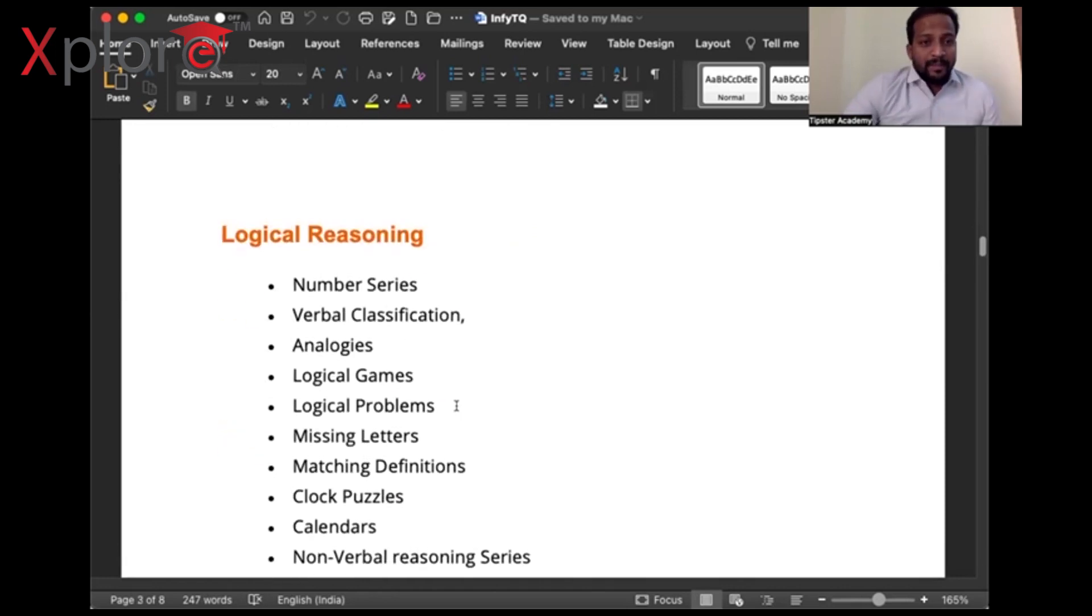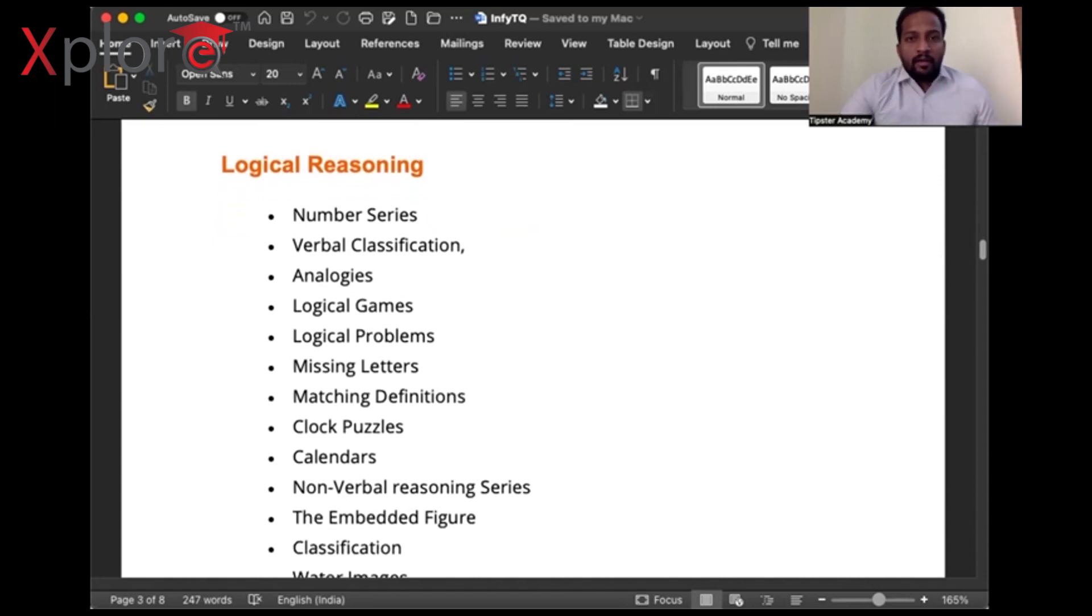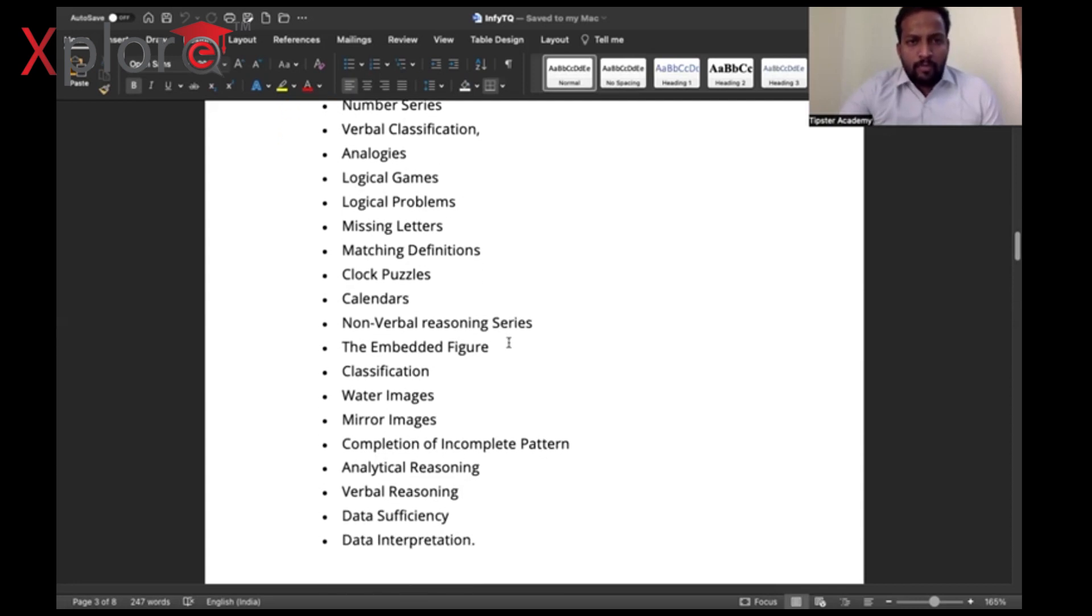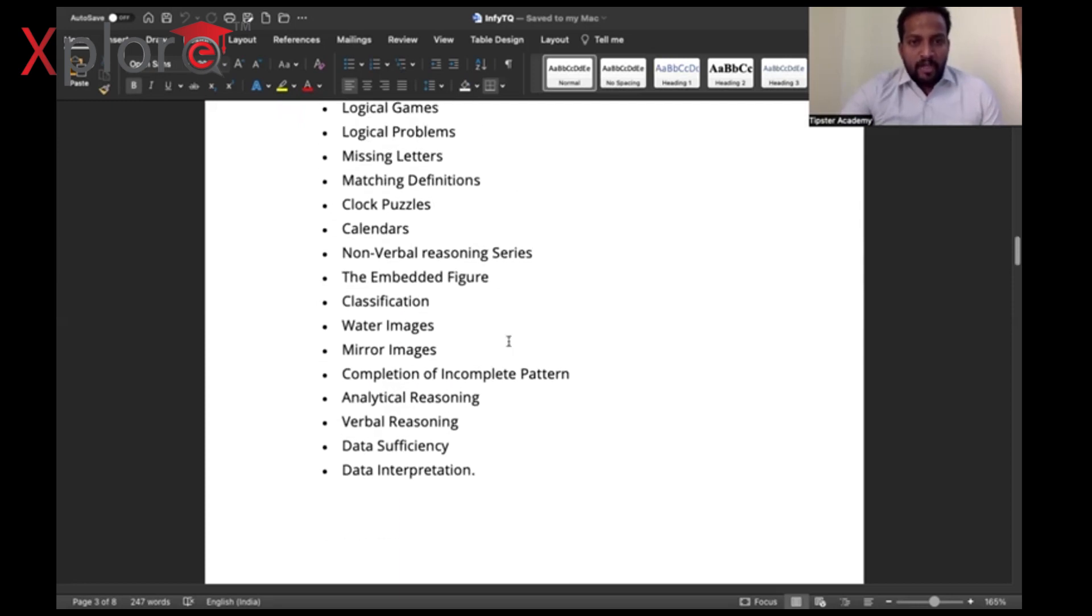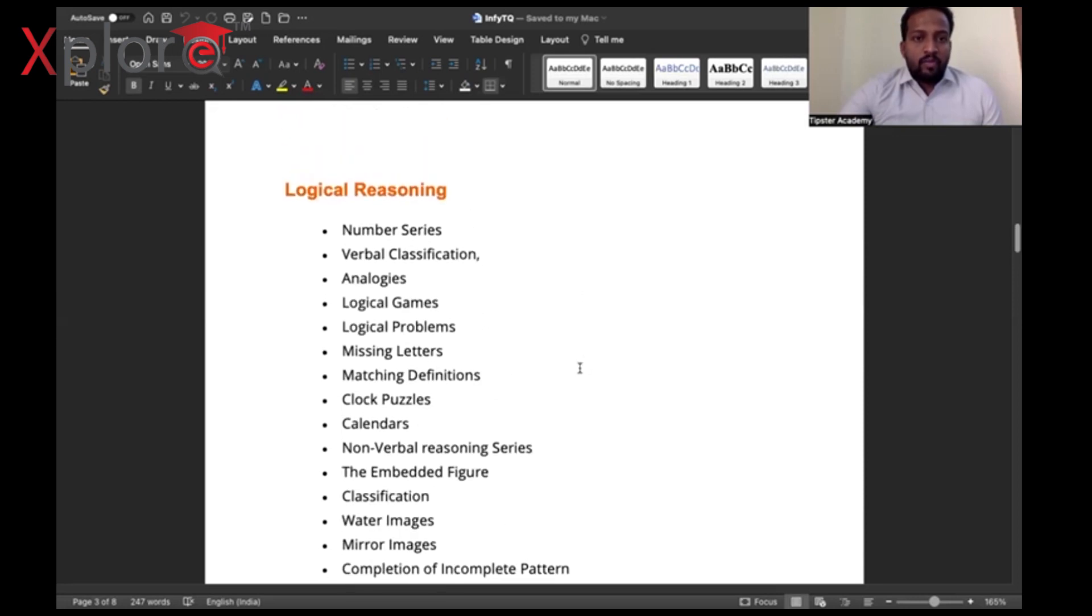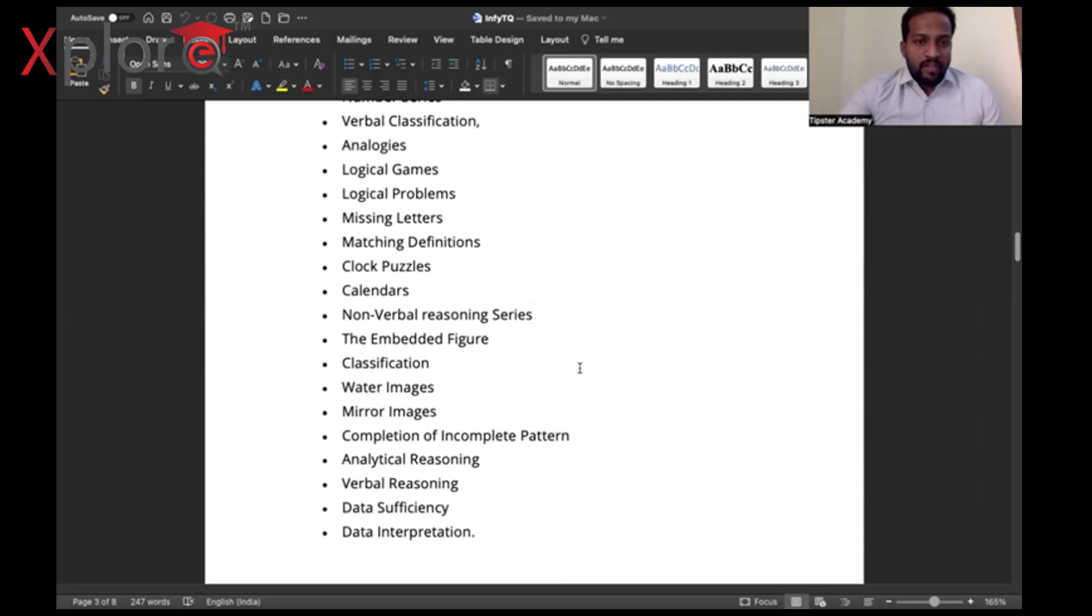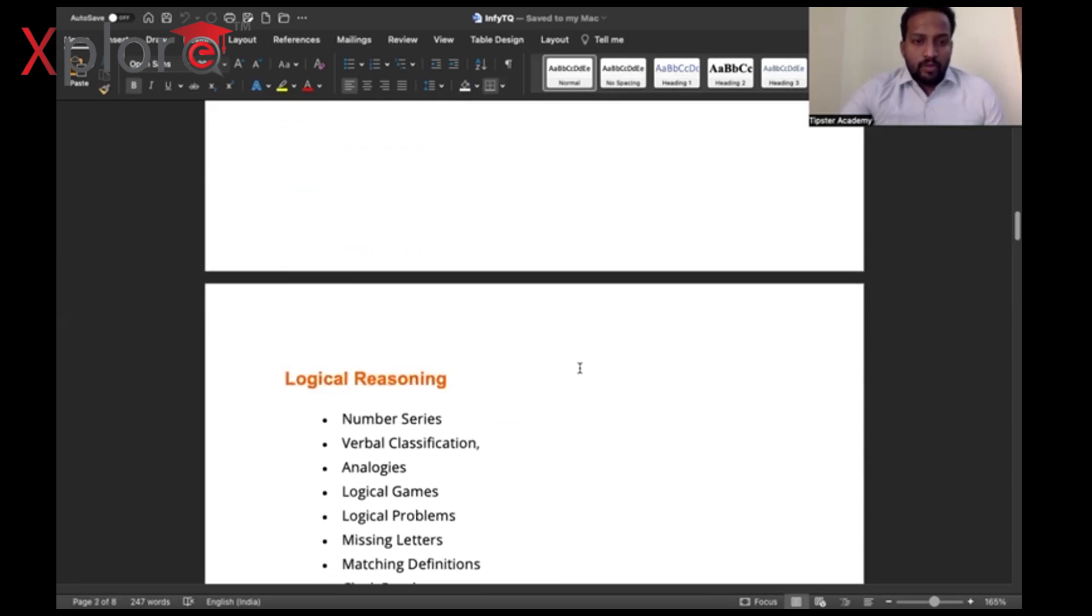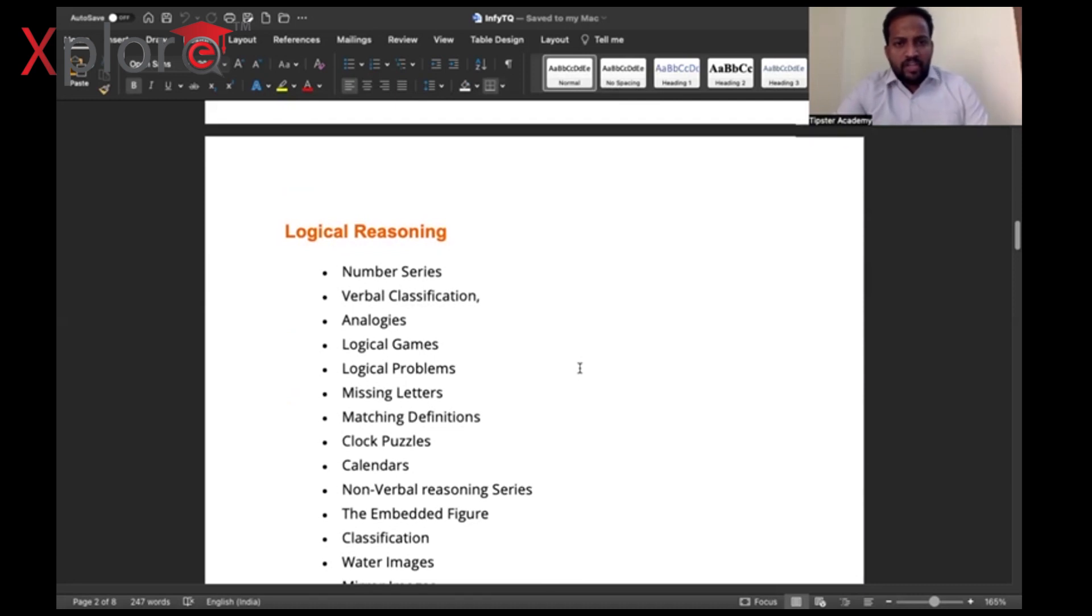Let us go through the syllabus. What kind of topics you may get in this Infosys written exam? As you can see on screen, logical reasoning is one of the most crucial aspects of Infosys from past few years. The list of topics includes number series, verbal classification, analogies, logical games, logical problems, missing letters, matching definitions. Please make a note of all these topics which are very important for you. I'm scrolling down for your convenience; take a screenshot or make a note.